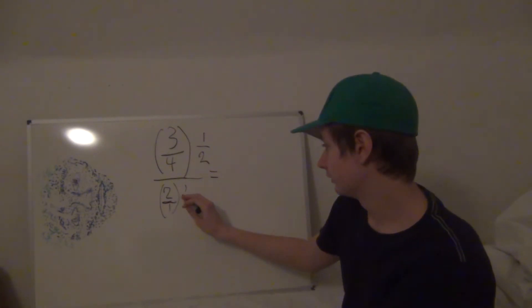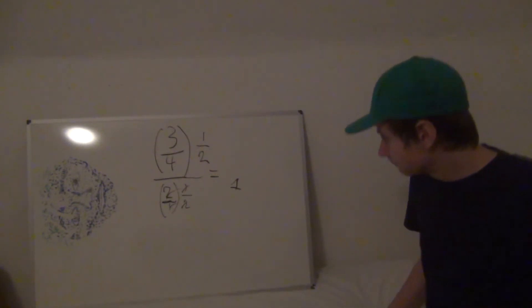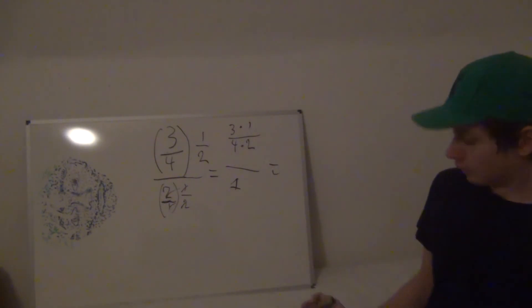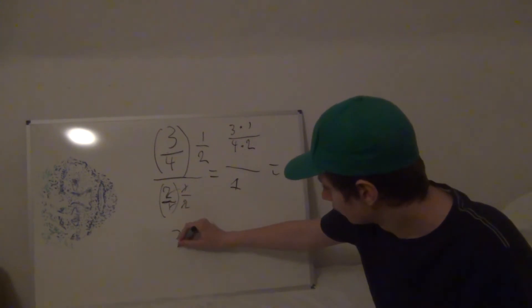Which down here gives me 1, and up here I'll get 3 times 1 divided by 4 times 2, which is 3 over 8.